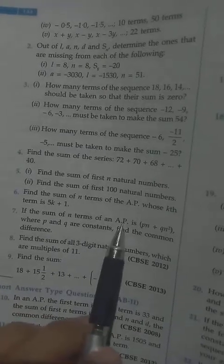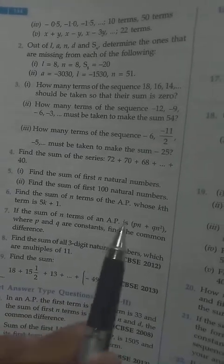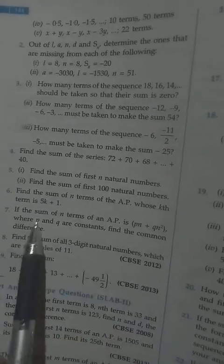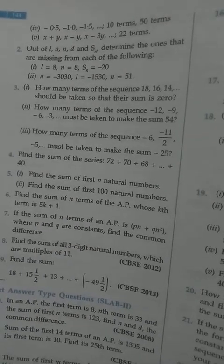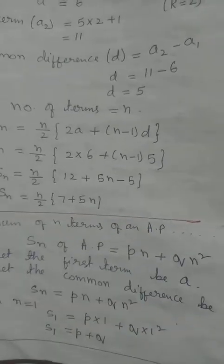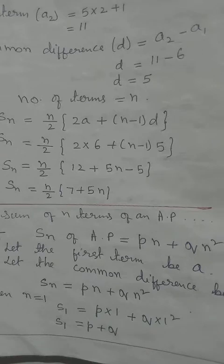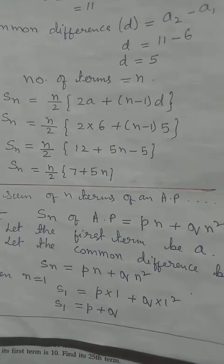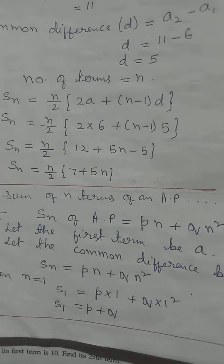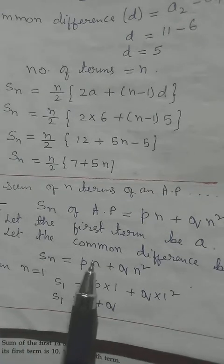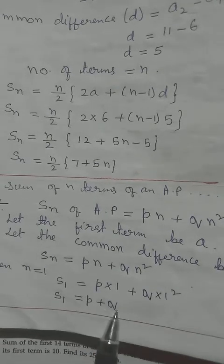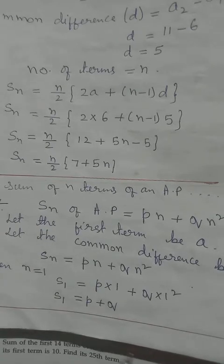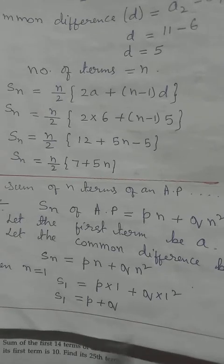Question 7: the sum of N terms of an AP is S_N = PN + QN², where P and Q are constants. We need to find the common difference. To get the first term, set N = 1: S_1 = P(1) + Q(1)² = P + Q. Since S_1 contains only one term, A_1 = P + Q.